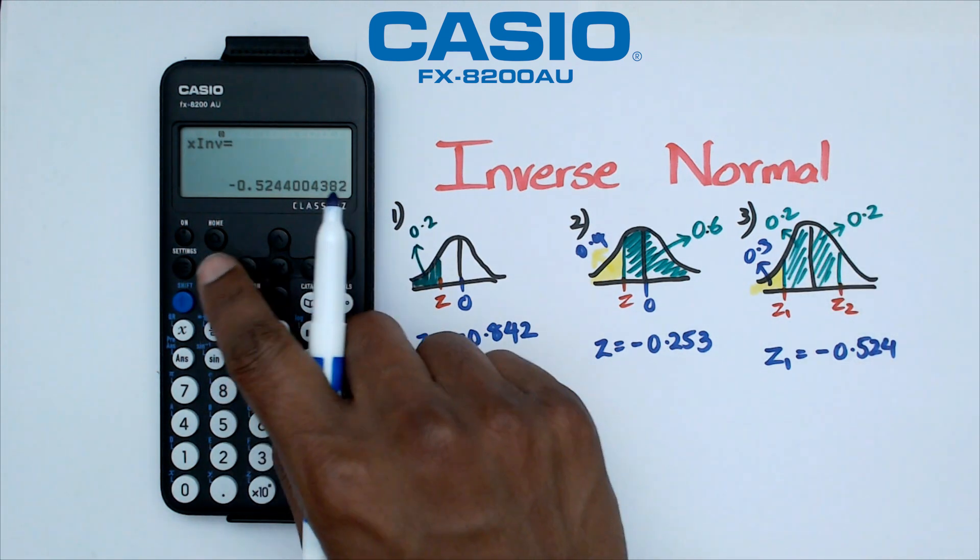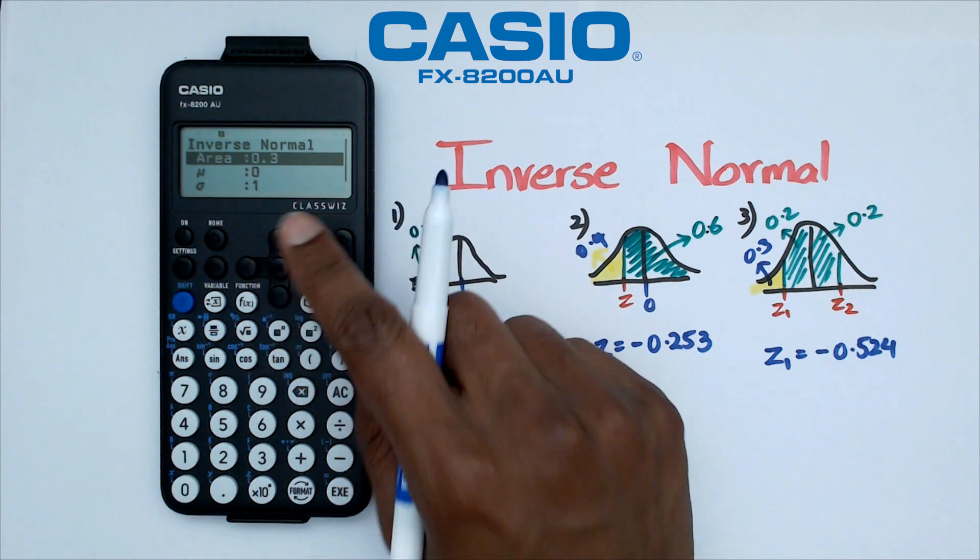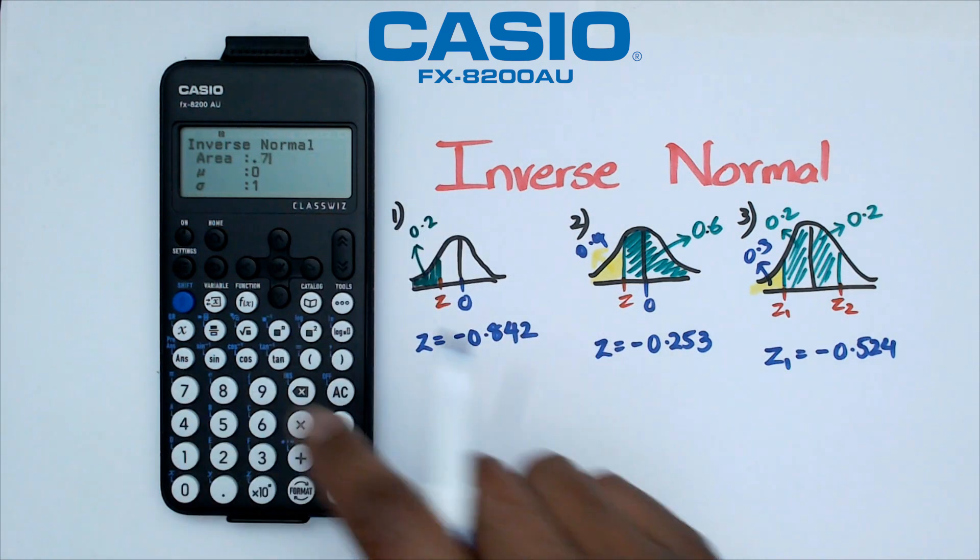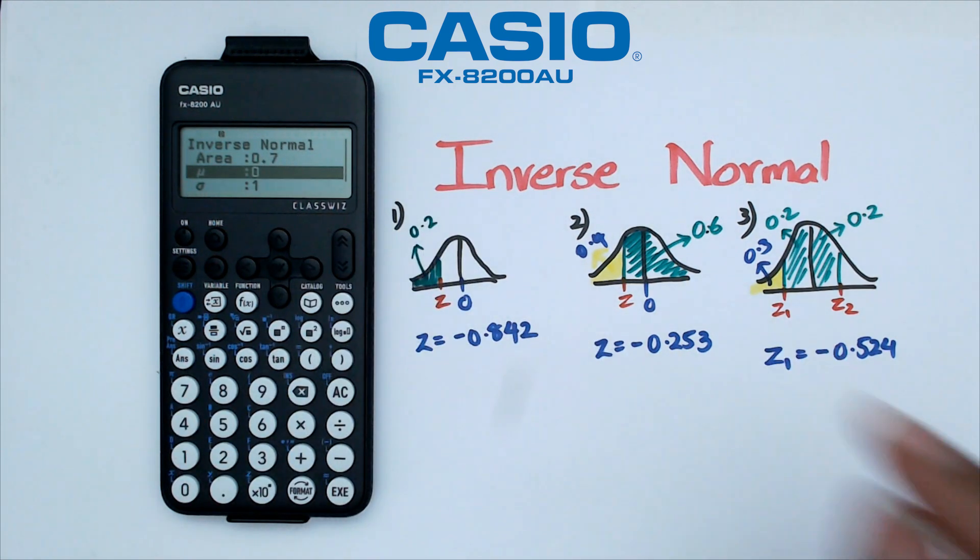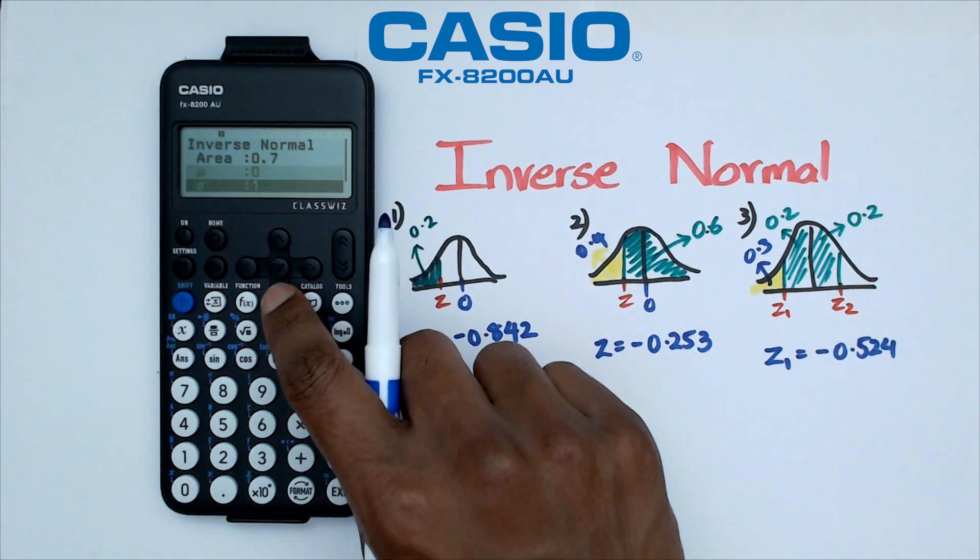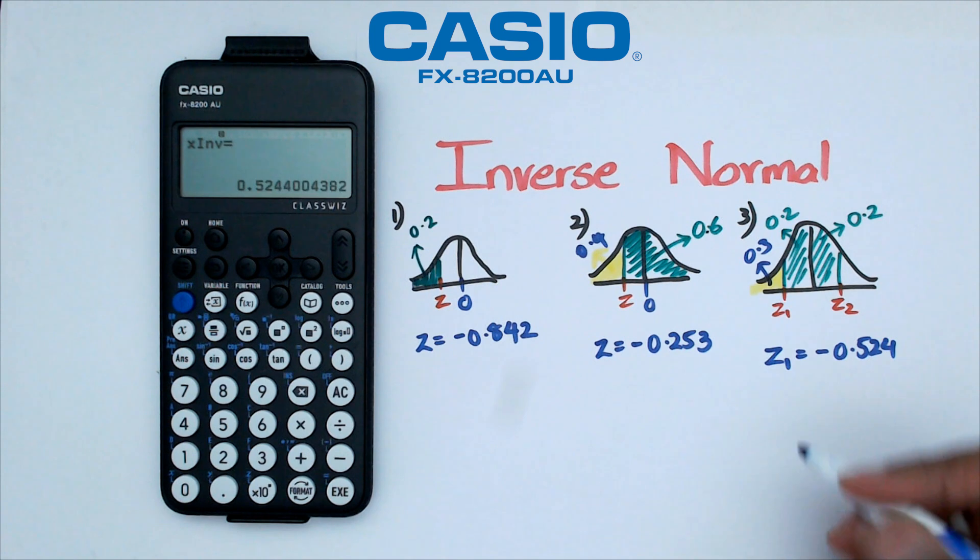So we're actually going to go back to our calculator and under inverse normal we're going to put 0.7 as area. Now it should be the same as 0.524 but it should be a plus and let's just see if that happens. There we go.